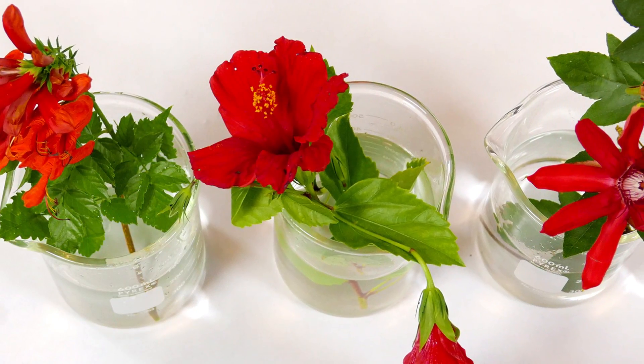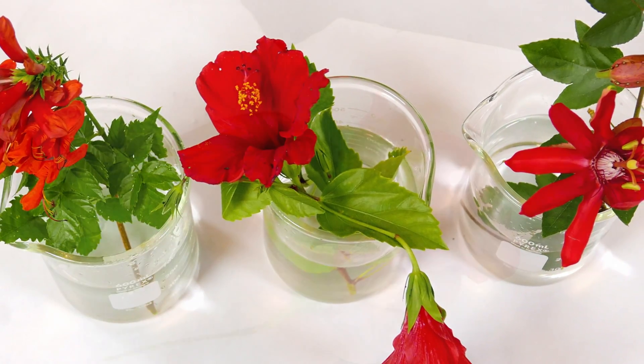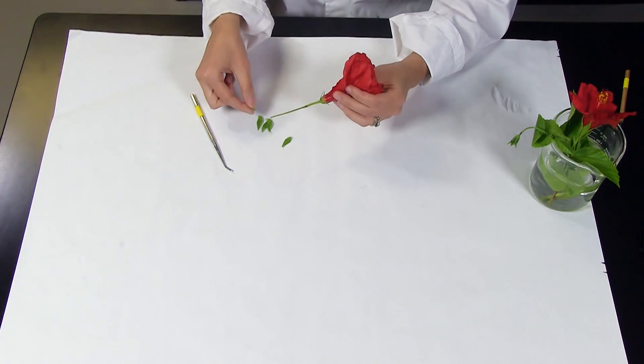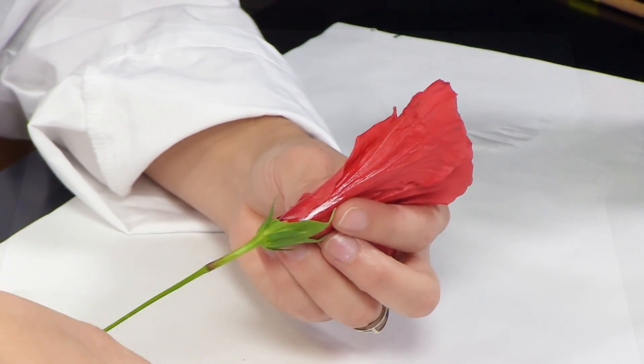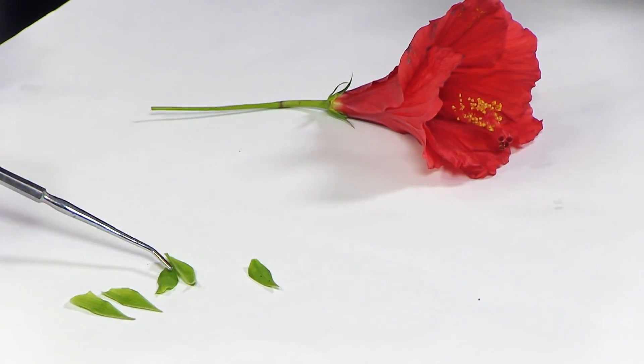You'll need three different types of flowers to complete this lab. Your flowers may look different than the ones in this video but they'll have the same parts. First, pull off the sepals of each flower and count how many there are.